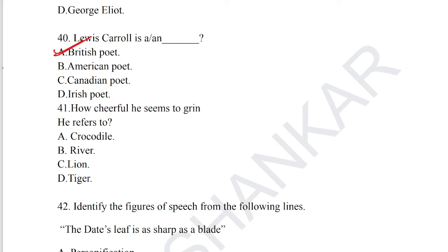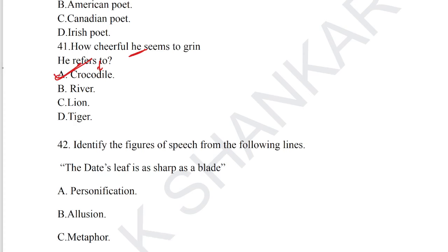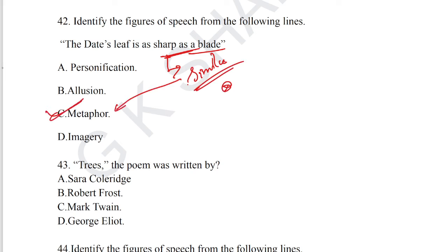Question number 41: 'How cheerfully he seems to grin — he refers to?' The crocodile is the answer. Option A is the correct answer. Question number 42: identify the figure of speech — 'The dates leave as sharp as a blade.' 'As sharp as' is a comparison, which suggests simile, but since simile is not in the options, the implied form — metaphor — is the answer. Option C is the correct answer for question number 42.